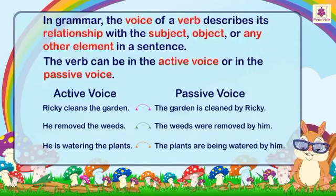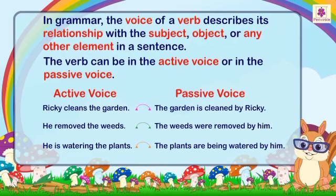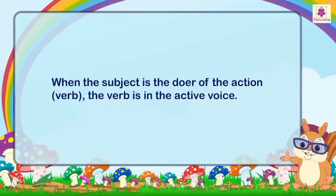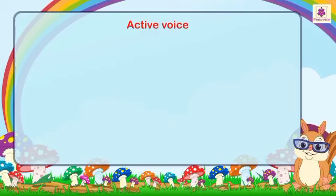Look at these sentences. In all these sentences, the same messages are given in two different ways — first in the active voice, and then in the passive voice, without changing the meaning or the tense. When the subject is the doer of the action, the verb is in the active voice. When the subject is the receiver of the action, the verb is said to be in the passive voice.